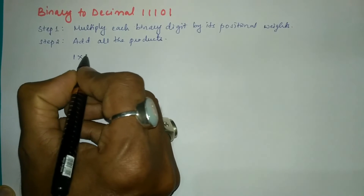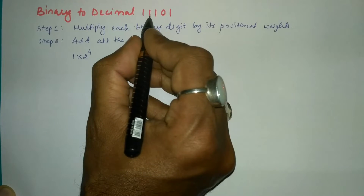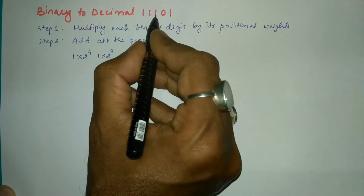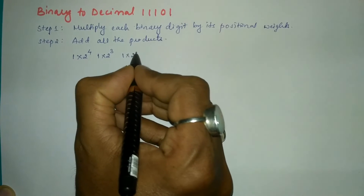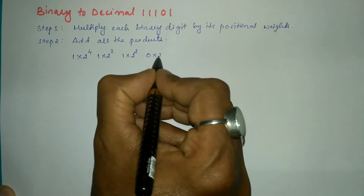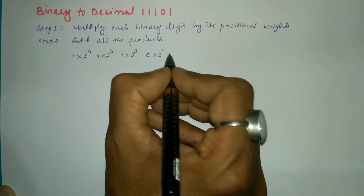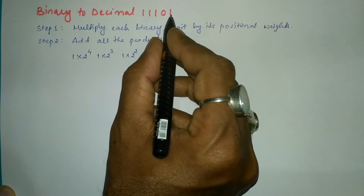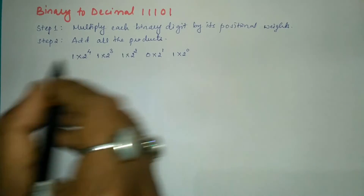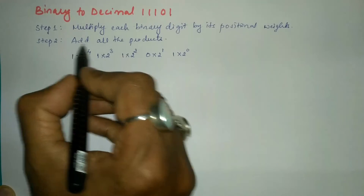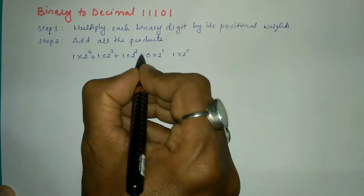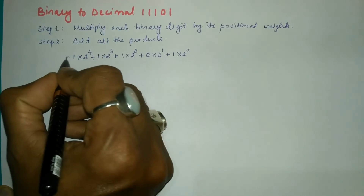I have to write 1 × 2^4. The next bit is 1 × 2^3. The next bit is 1 × 2^2. Next we have bit 0 × 2^1. The rightmost bit is 1 × 2^0. Step 2 says add all the products, so I need to insert a plus sign between these products.